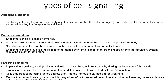Looking individually at the types of cell signaling: autocrine signaling involves a cell secreting a hormone or chemical messenger known as an autocrine agent, which binds to autocrine receptors on that same cell, leading to a change in the cell itself. Endocrine signaling, also known as hormonal signaling, involves hormones produced by endocrine cells that travel through the blood to reach all parts of the body. The specificity of this signaling can be controlled if only some cells can respond to a particular hormone, involving release of hormones by internal glands directly into the circulatory system to regulate distant target organs.